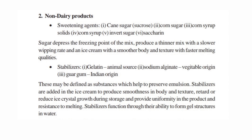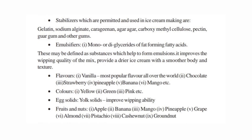Stabilizers are called gelatin, sodium alginate, and gorgam. Gelatin is of animal source. Vegetable originals are called sodium alginate, gorgam — Indian originals. Every animal and vegetable source stabilizer functions through their ability to form gel structures in water. Permitted stabilizers include gelatin, sodium alginate, carrageenan, agar agar, carboxyl methyl cellulose, pectin, gorgam and other chemicals.